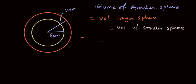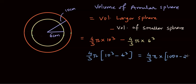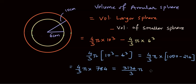With the given values, we apply the volume of a sphere formula for the larger sphere, which is 4/3 π times radius cubed. The radius is 10, so we write 10 cubed minus 4/3 π times the smaller radius cubed, which is 6. We take out 4/3 π common and compute 10 cubed minus 6 cubed: 1000 minus 216 equals 784. This gives us 4/3 π times 784, which equals 3136π/3 cm³.